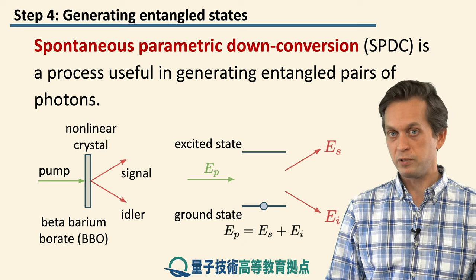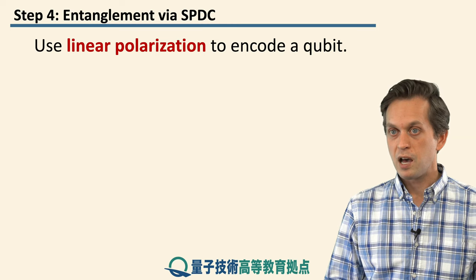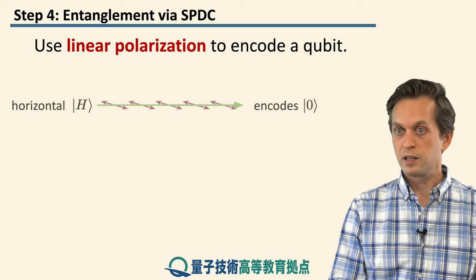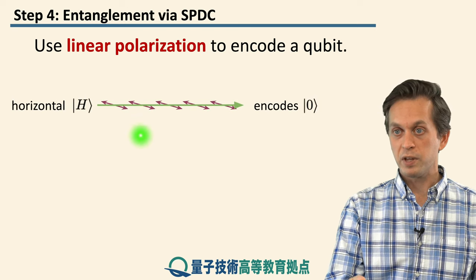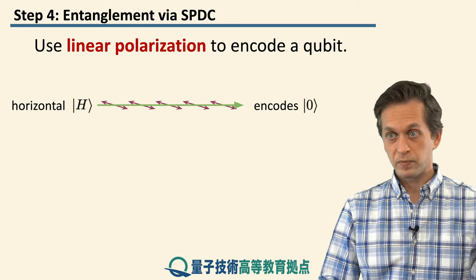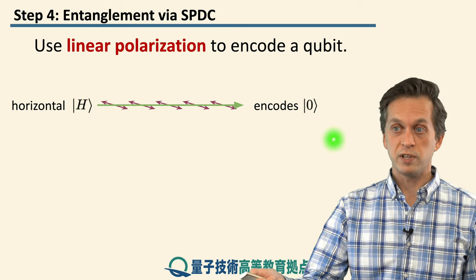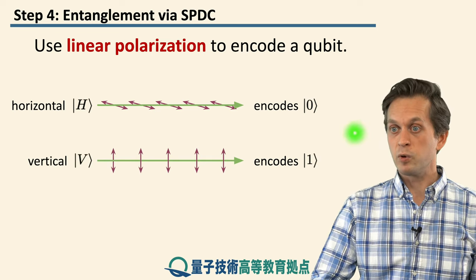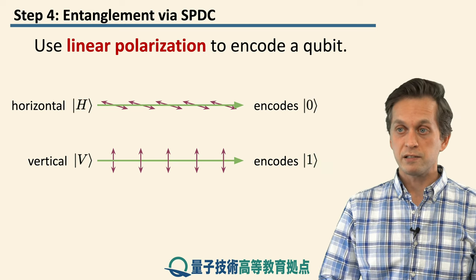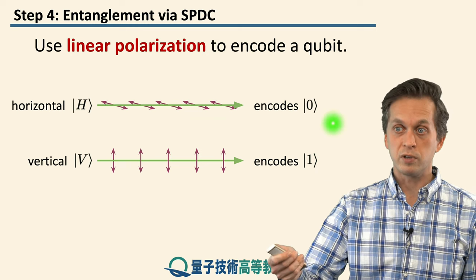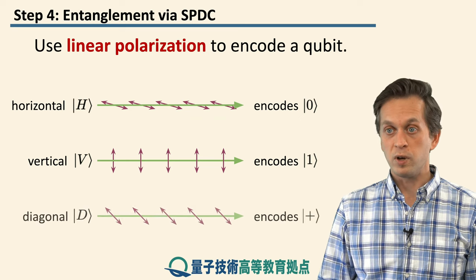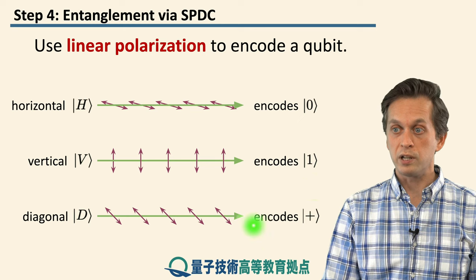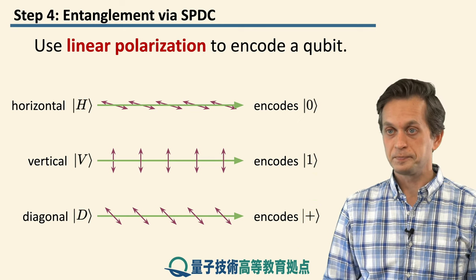That is the basic process of spontaneous parametric downconversion. Now let's see how polarization of light interacts with this process. We are going to consider linearly polarized light. Taking our green pump laser, we can make it oscillate only in one plane. For example, if we make it oscillate in the horizontal plane, this encodes our zero state of a qubit. We can also make the light oscillate only in the vertical plane — in that case, we say it encodes a one. We already know from previous steps that we can talk about superpositions of these states, zero plus one. In the polarization picture, we can get diagonally polarized light, which we call D, and this encodes our equal superposition of zero and one, or what we call a plus state.